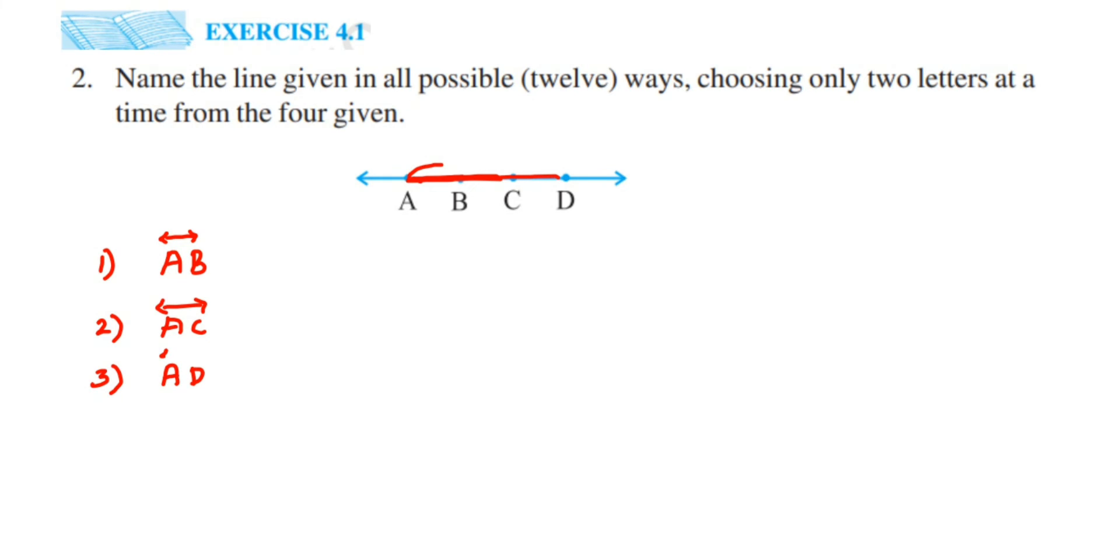Now we can also write opposite of it. Like I have written AB, I can write it as BA. If it's AC I can write it as CA, and if it's AD I can write it as DA, but I'm not doing it right now. I don't want to create confusion. So we have started with A and we have done all three combinations.